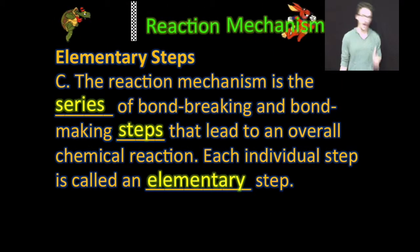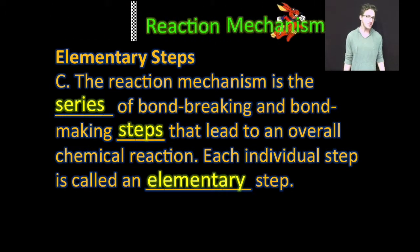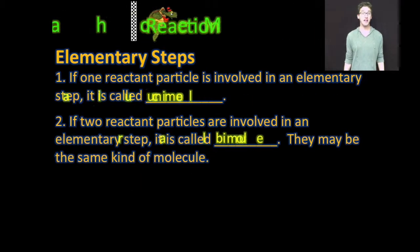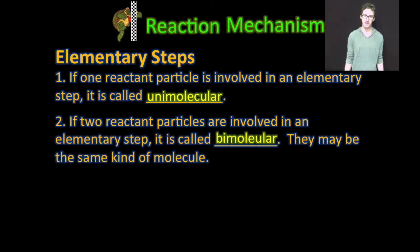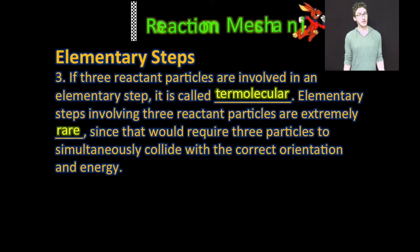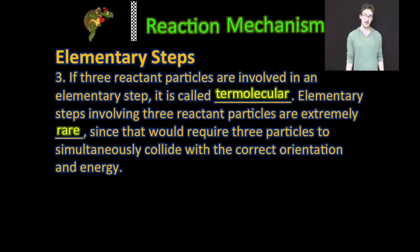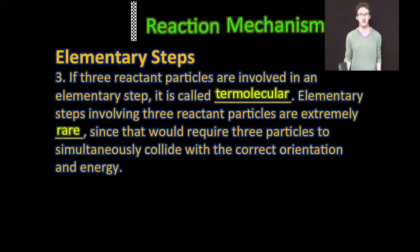The reaction mechanism breaks down the series of bond breaking and bond making steps that lead to an overall chemical reaction. Each individual step is called an elementary step. If you have an elementary step with one reactant particle, we call that unimolecular. If an elementary step has two reactant particles, we call that bimolecular — and the two particles involved can be two of the same molecule. If you have three reactant particles in an elementary step, it's called termolecular. Elementary steps involving three reactant particles are extremely rare, since it would require three different particles to simultaneously collide with the correct orientation and energy — a very unlikely occurrence.